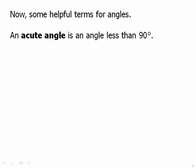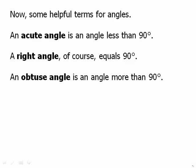Now, some helpful terms for angles. First of all, an acute angle is an angle less than 90 degrees. A right angle, of course, is 90 degrees. And an obtuse angle is more than 90 degrees. We'll be using these terms throughout our discussion of geometry. And it's possible that they could appear on the test.